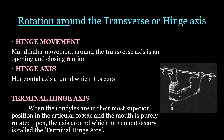The first is rotation around the transverse or hinge axis. The transverse axis runs horizontally from the right side of the mandible to the left side. Rotation around this axis is seen during the opening and closing of the mouth. During initial mouth opening, the transverse axis passes through the head of the condyle, and during late stages of mouth opening, it passes through the mandibular foramen.